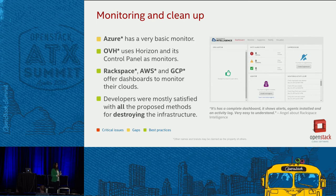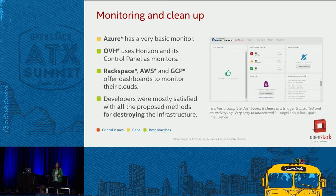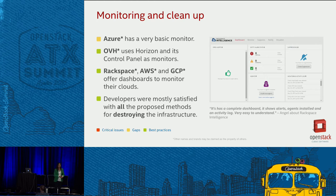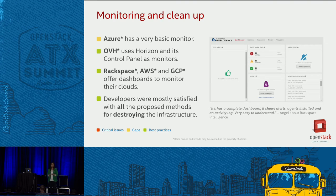For monitoring and cleanup: Rackspace, Amazon Web Services, and Google Cloud provide monitoring to see all the resources running in your cloud, and developers love these tools because they want to be aware of how their resources are doing. They also use monitoring to make decisions about when to scale the application. OVH also has a monitoring tool, but it's very basic — it only shows RAM, CPU, and traffic by instance. About cleanup, all providers have good methods to delete the application resources without any problem, so they are on the same level.